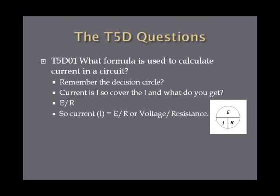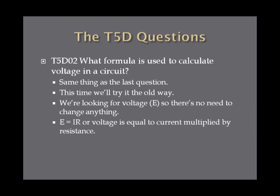The first question: What formula is used to calculate current in a circuit? Use the decision circle — current is I, so cover up the I with your finger and you get E over R. So current I is equal to E over R, or voltage divided by resistance. Next: What formula is used to calculate voltage in a circuit? We're looking for E, so there's no need to change the original formula. E is equal to IR, where voltage in volts equals current in amperes multiplied by resistance in ohms.